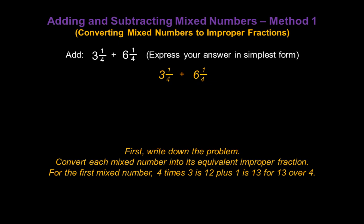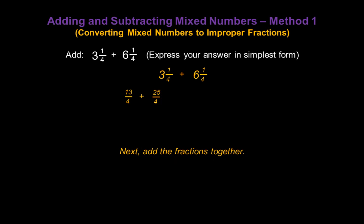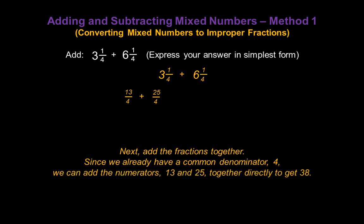So three and one-quarter as an improper fraction is thirteen over four. For the second mixed number, four times six is twenty-four, plus the one in the numerator gives us twenty-five over four. Now we can add the fractions together. Since we already have a common denominator of four, we can add the numerators thirteen and twenty-five together directly, giving us a numerator of thirty-eight and a denominator of four.